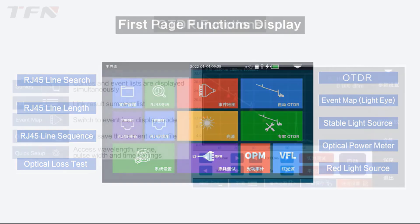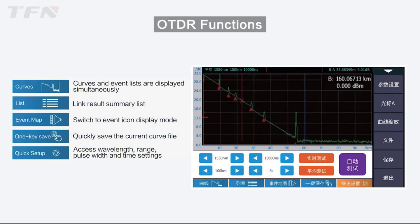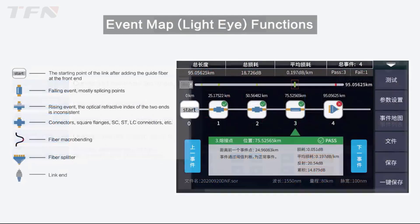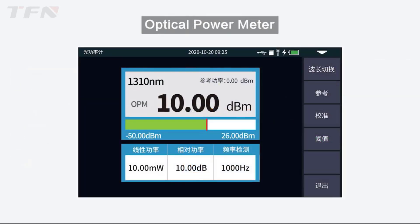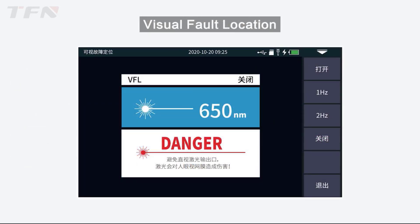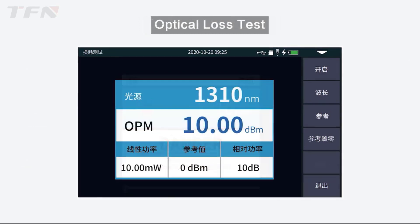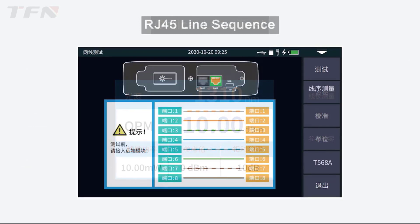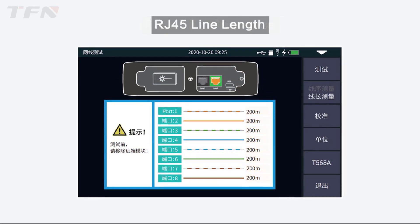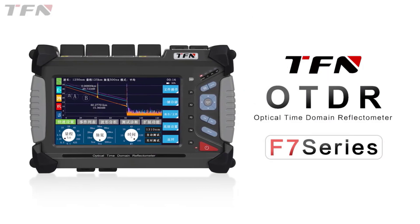OTDRs utilize the principle of backscattering to analyze the properties of the fiber, emitting pulses of light and measuring the time and intensity of reflections caused by inconsistencies like splices, bends, or breaks within the fiber. This data is then graphically represented, enabling technicians to pinpoint the location and characteristics of any anomalies within the fiber, facilitating efficient troubleshooting and maintenance.